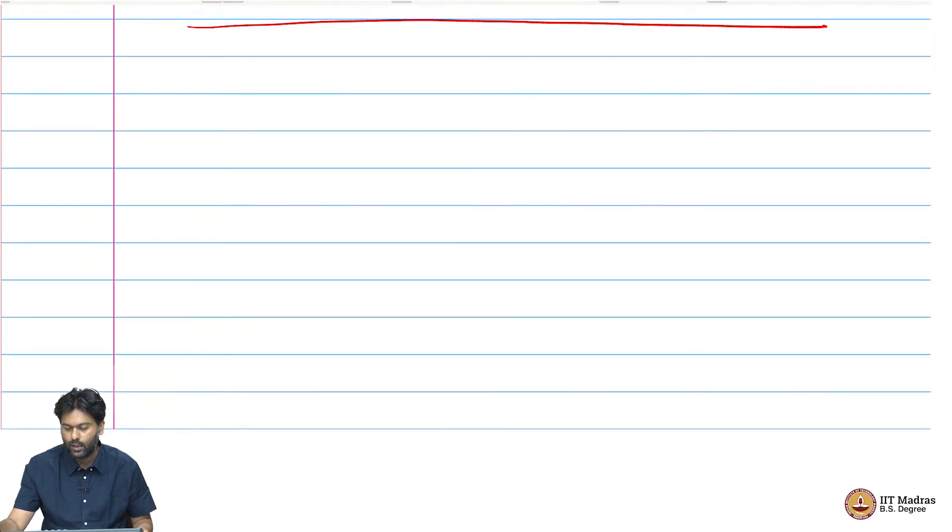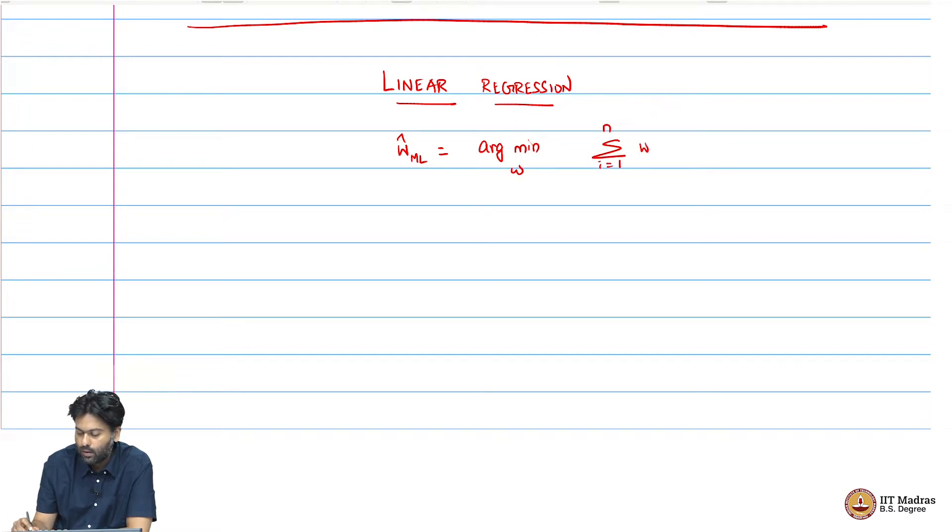To see everything together at a high level view, linear regression can be summarized as follows. Linear regression is w hat ml equals the arg min over w, sum over i equals 1 to n, w transpose xi minus yi square.